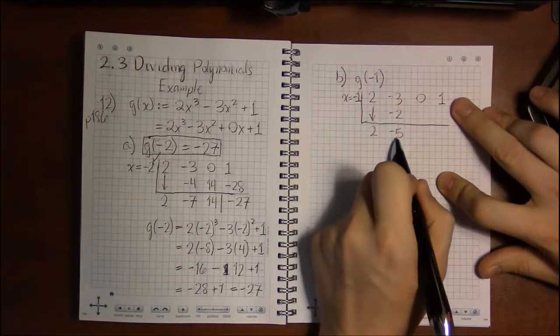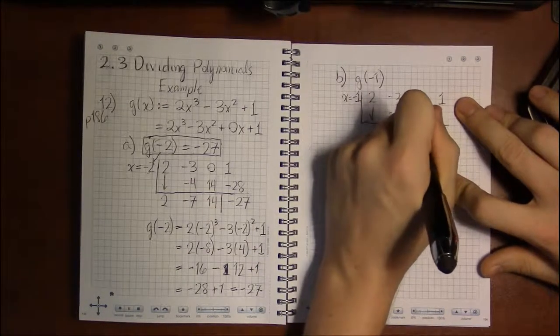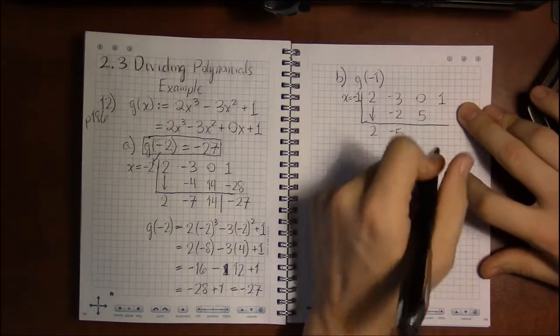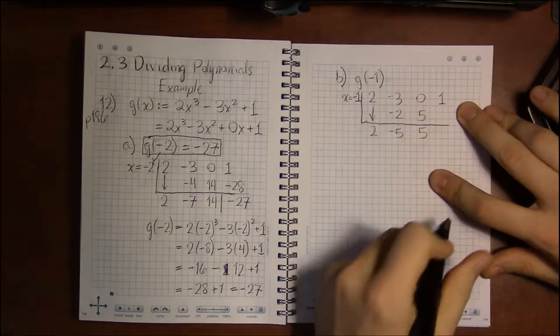Multiply minus 1 times minus 5 is 5. Add to get down, 0 plus 5 is 5.